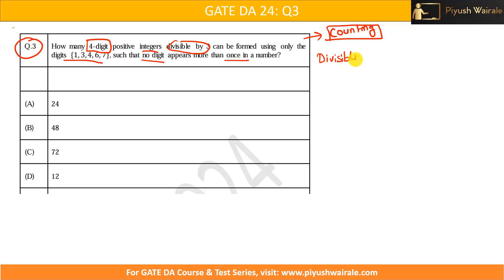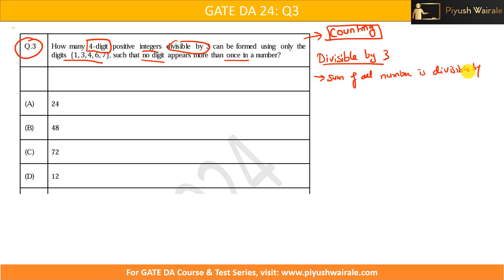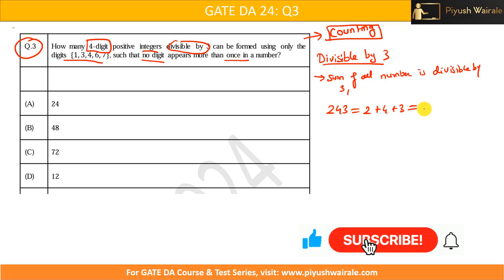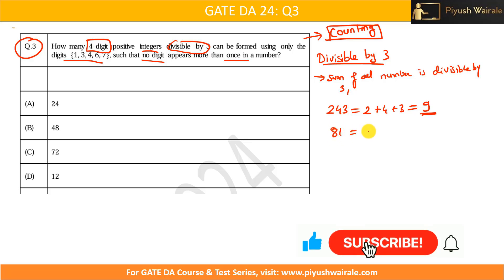First we need to know the divisibility condition for three. A number is divisible by three if the sum of all its digits is divisible by three. For example, take 243: two plus four plus three equals nine, and nine is divisible by three. Similarly, 81: eight plus one equals nine, also divisible by three.